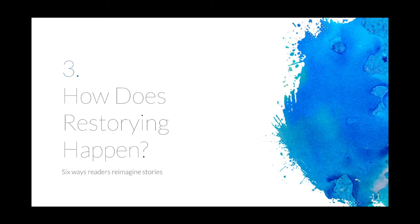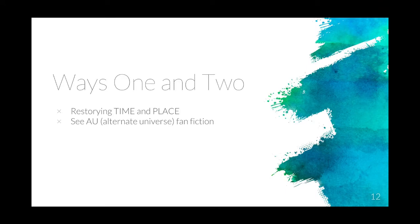So how is it happening? Restorying, or imagining oneself into a story, involves re-imagining the story itself. Thomas and Storniolo highlight six ways that can happen. The first and second are re-storying time and re-storying place, which involves changing the location of narratives to alternate times and places. So what if Moby Dick was set today? What if Harry Potter moved to Seattle after Deathly Hallows was over? This is actually a very popular way of writing fanfiction, and it's called AU fiction, which stands for Alternate Universe.